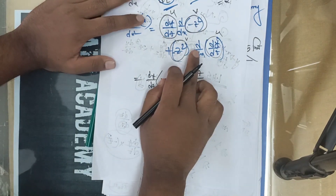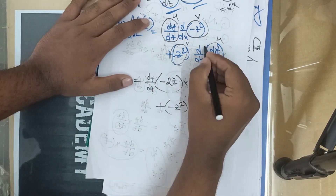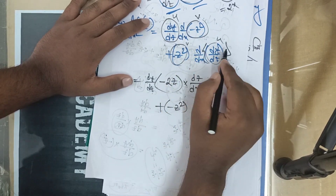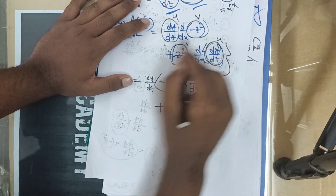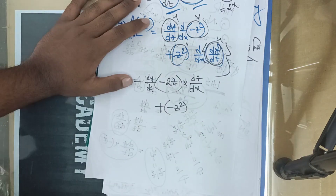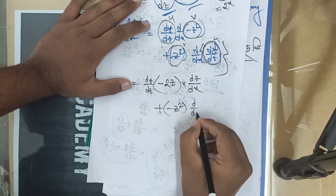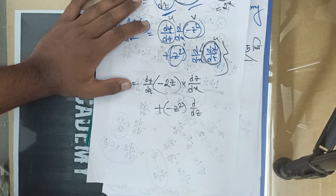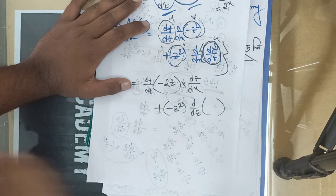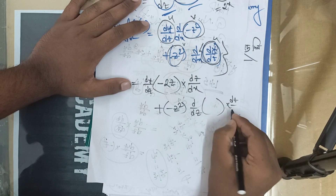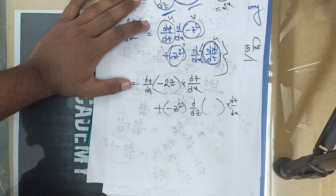Now let's say — ddx call packet, dy by dz call packet. So here we can put d/dx and put d/dz. What is the answer? DZ. Let's balance the answer. DZ by DX is the answer.